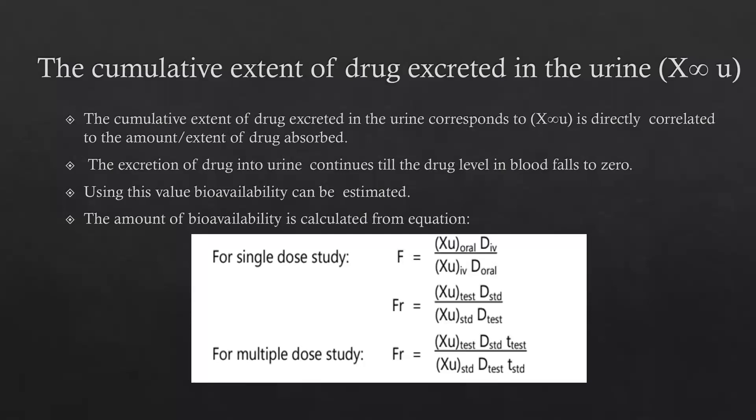Similarly, FR represents relative bioavailability. For relative bioavailability, FR equals XU of test multiplied by dose of standard, divided by XU of standard multiplied by dose of test. For multiple-dose study, the relative bioavailability FR equals XU of test multiplied by dose of standard multiplied by Tmax of test, divided by XU of standard multiplied by dose of test multiplied by T standard.